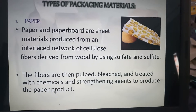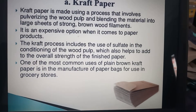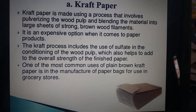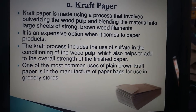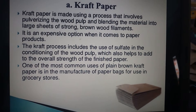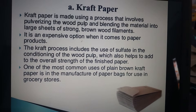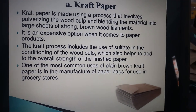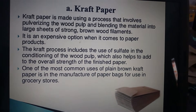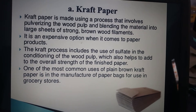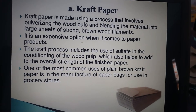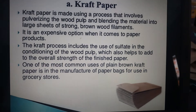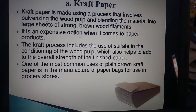The biggest advantage of paper is that it is biodegradable. The disadvantage is it does not have much tensile strength to carry heavy products. To improve on that, the first type is kraft paper, in which the tensile strength is improved, so it is mostly used in grocery stores.